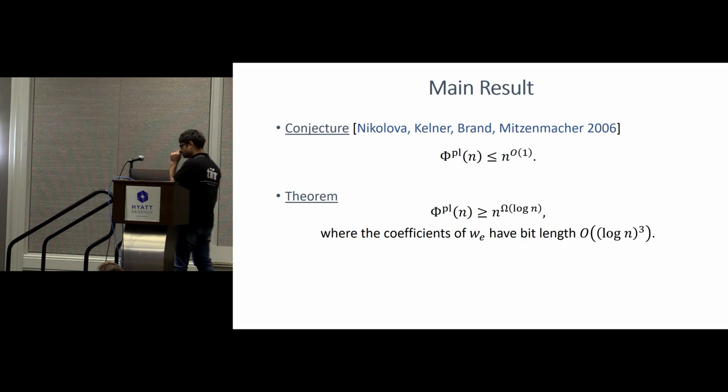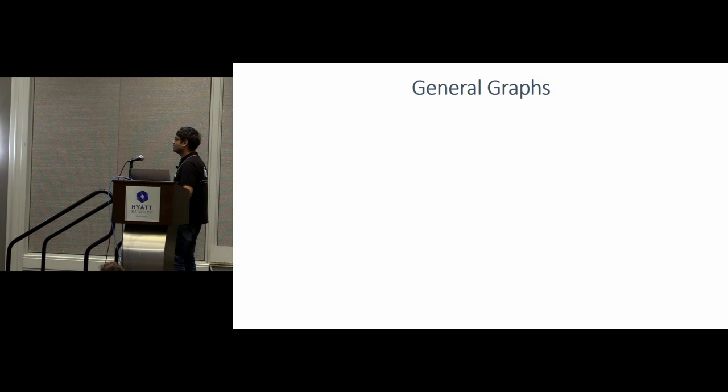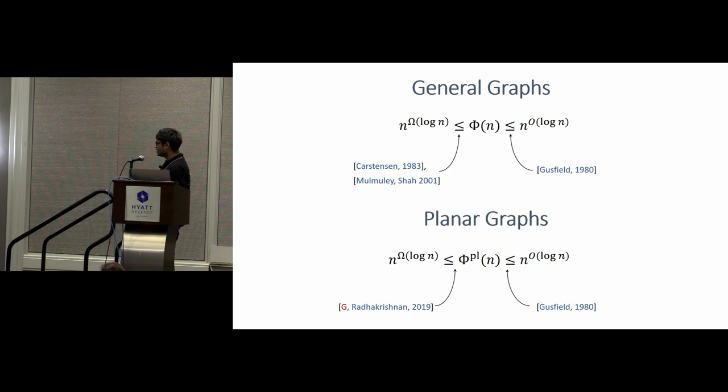And when we started working on the problem, we also believed it was true, and we kept failing, until we realized that the reason we were failing was that it was not true. So yeah, this brings us to our main result, and that is that for planar graphs as well, you have the same lower bound of n raised to log n, and our proofs are highly inspired by the Carstensen and the Mulmuley-Shah constructions, and that's why we get the same bounds on our bit length, the bit lengths of our coefficients. So, yeah, let me just once present the final landscape before I move on to the proof. So, basically, all upper bounds, all lower bounds are n raised to log n, and down there, that's our contribution.